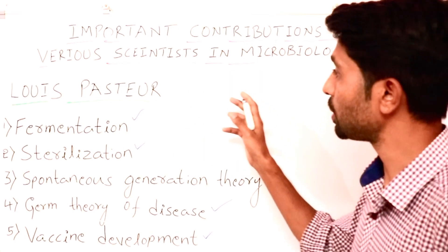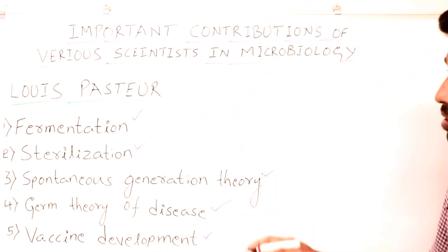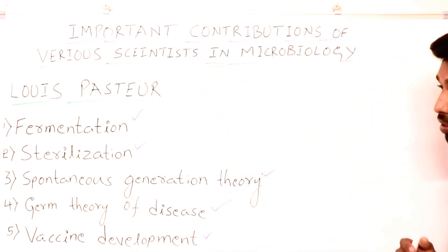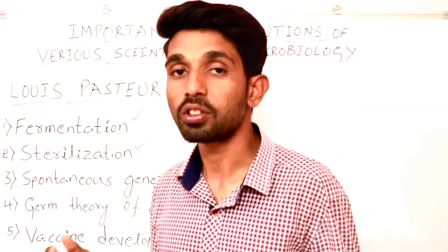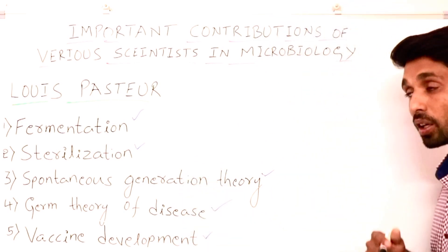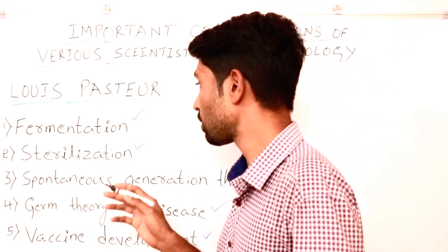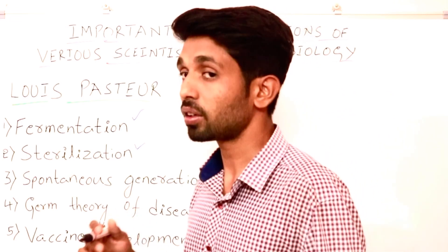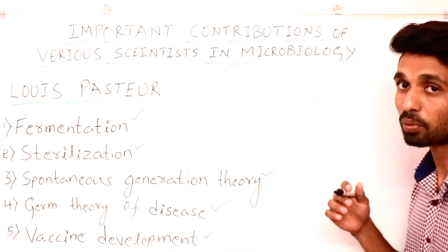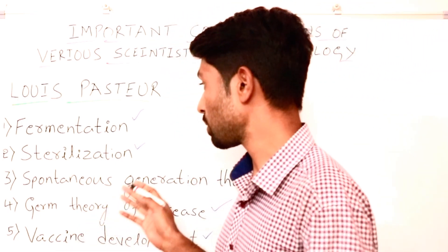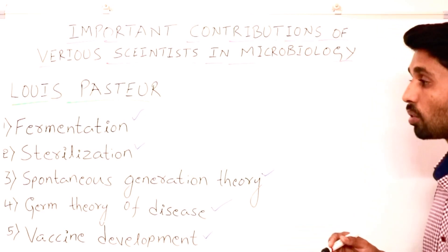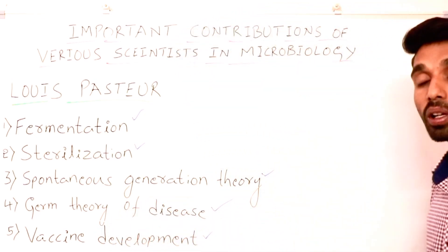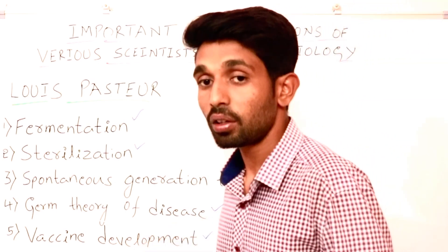Now let's review the complete session on the contributions of Louis Pasteur in microbiology. Fermentation is a process in which microorganisms' activity creates a desirable change in food and beverages — the example is conversion of milk into curd. Sterilization refers to a process that removes, kills, or deactivates particular microorganisms from a substance. The example for sterilization is boiling of milk — boiling is sterilization by heating, and keeping milk in the fridge is sterilization by cooling process.